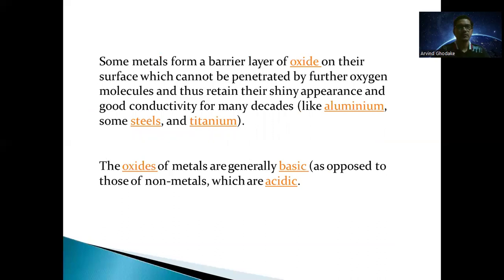Sometimes metals form a barrier layer of oxide on their surface which cannot be penetrated by further oxygen molecules, thus retaining their shiny appearance and good conductivity for many decades — for example, aluminum, some types of steels, and titanium. The oxides of metals are generally basic, as opposed to those of non-metals, which are acidic.